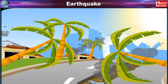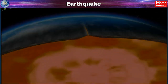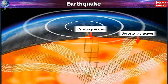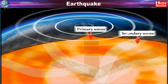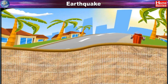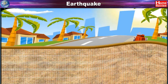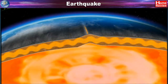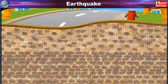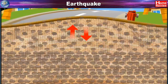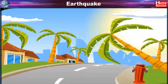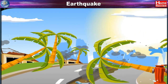Secondary waves are very destructive. Surface waves are generated when primary and secondary waves reach the surface, creating a new set of waves that spread along the circumference of the earth. Due to surface waves, the grains in the rock move up and down as well as sideways. Therefore, surface waves prove to be the most destructive.